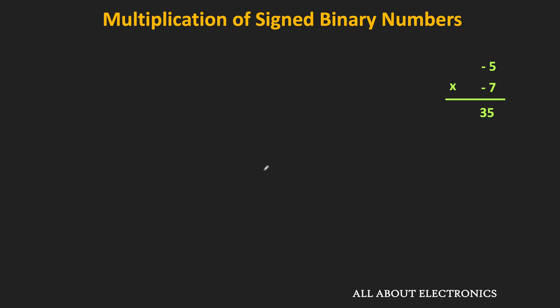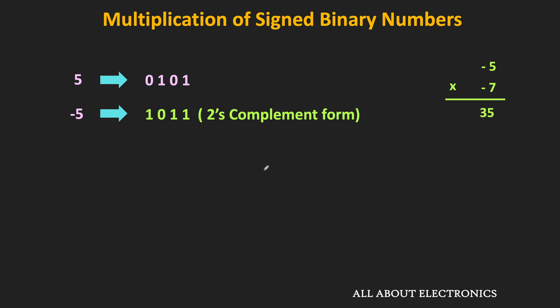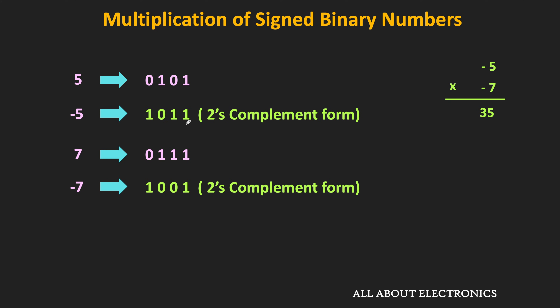Let's say we want to multiply -5 and -7. First, let us represent both numbers in 4-bit 2's complement form. +5 is 0101, so -5 in 2's complement is 1011. +7 in 4-bit form is 0111, so -7 in 2's complement is 1001. We now have the 2's complement representations for both negative numbers.